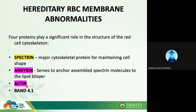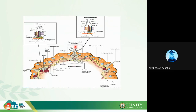Ankyrin and actin are transmembrane proteins responsible for vertical interactions on your red blood cell membrane. They are like anchors that prevent your membrane from being lost — similar to an anchor preventing a ship from being taken by the current. The vertical interaction between these transmembrane proteins prevents the loss of your RBC membrane over time.